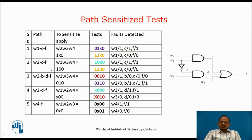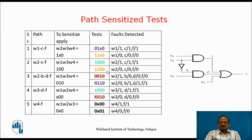On the same lines, for the next path W2, C, F, we must have D and W4 equal to 0, and W1 must be 1. D will be 0 when W3 is 0, and W4 must also be 0, and W1=1. So W1, W3, W4 as 1, 0, 0 will activate this path. Therefore, test vectors 1,0,0,0 and 1,1,0,0 will determine all the faults on path W2, C, F.